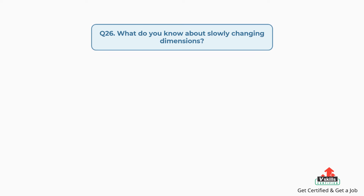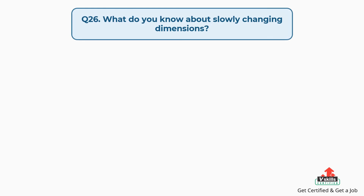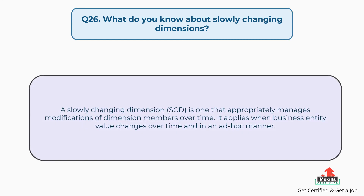Question number twenty-six: What do you know about slowly changing dimensions? A slowly changing dimension, SCD, is one that appropriately manages modifications of dimension members over time. It applies when a business entity value changes over time and in an ad hoc manner.